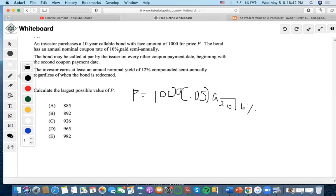So, base amount, the bond has an annual nominal. We'll put these down. The bond may be called at par by the issuer on any other coupon date beginning with the second coupon payment date. So, could be called at this amount.